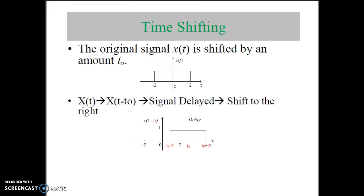Let us consider the first type of operation: time shifting operation. Let x(t) be the original signal as shown in the figure. x(t) is a rectangular pulse present from minus 2 to plus 2 having amplitude value 1. If you shift x(t) to x(t minus t0), the original signal is shifted by t0 time instant, meaning the original signal gets delayed by t0 and shifted towards the right hand side.